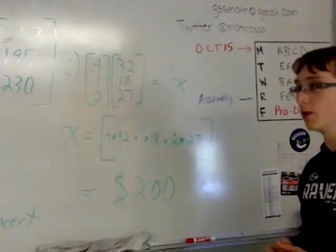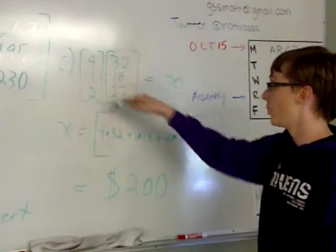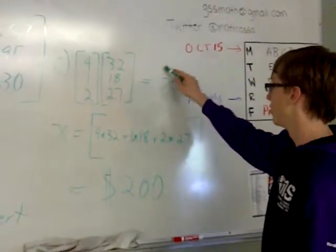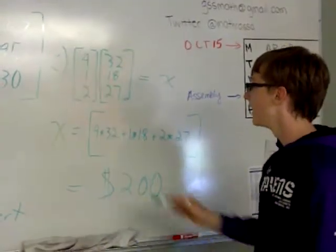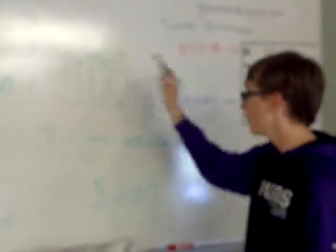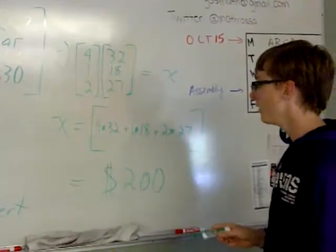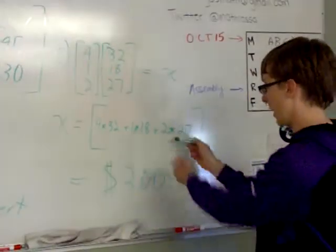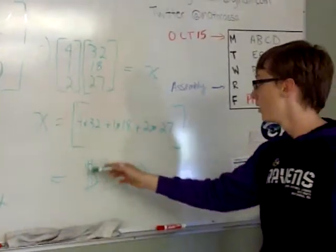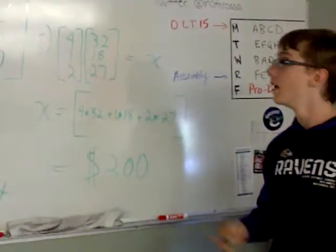Now the question is to find how much she's going to pay in total ticket prices. To do this, you put it in matrix format and create the X variable. And you make this statement that says that X equals 4 times 32, plus 1 times 18, plus 2 times 27. And you express it this way. And when you do that, you end up with a total price of $200. Thank you.